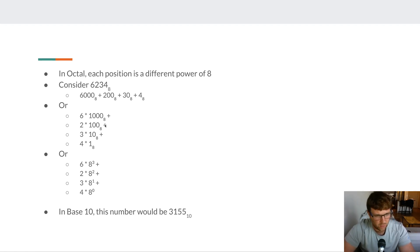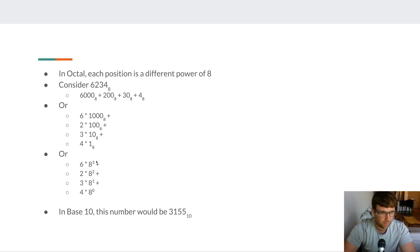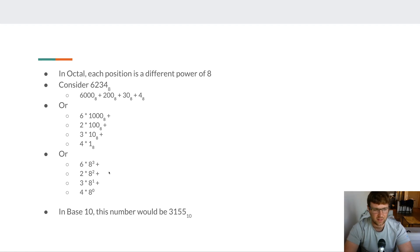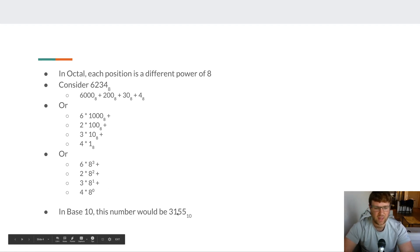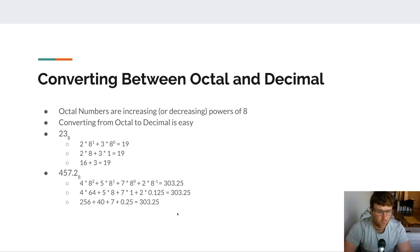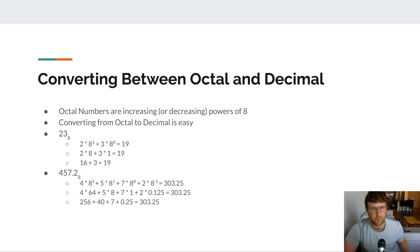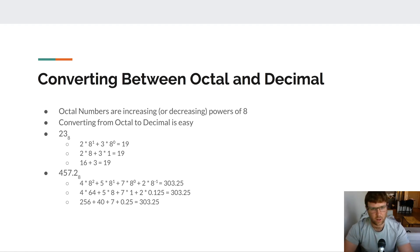So we see: 6 times 1 with three zeros, 2 times 1 with two zeros, 3 times 1 with one zero, 4 times 1 with no zeros. In decimal, these are just powers of 8: 6 times 8³ plus 2 times 8² plus 3 times 8¹ plus 4 times 8⁰, which equals 3155 in base 10. There's no simple pattern to memorize for converting between octal and decimal — you just have to work through the math.